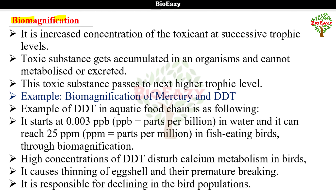Next term is biomagnification. It is the increased concentration of a toxic substance at successive trophic levels. Biomagnification mein koi bhi toxic element trophic level mein enter karta hai, to wo next trophic level se higher trophic level mein accumulated hota rehta hai. The toxic substance gets accumulated in an organism and cannot be metabolized or excreted out.